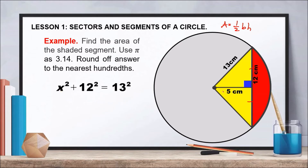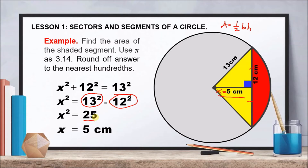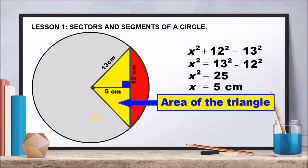Using the Pythagorean theorem: x² + 12² = 13². Transposing, x² = 169 − 144 = 25. Taking the square root, x = 5 centimeters. That is the height of our triangle.